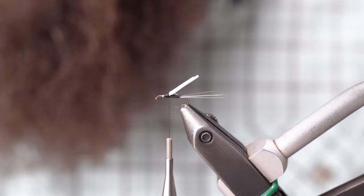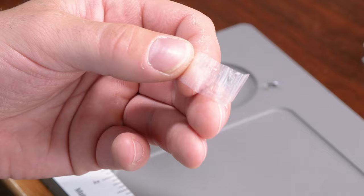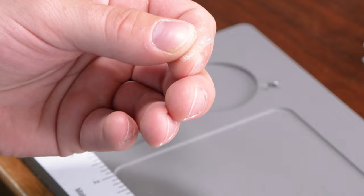Next, we're using some Swiss straw for the wing. You can trim this thinner than that if you'd like. I just like having a little more wing to it. And it's going to pinch down once you tie it in anyways.